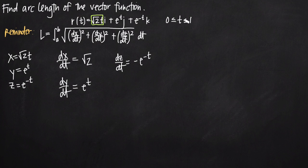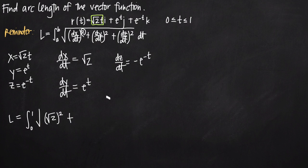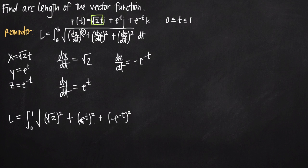Now we have all three derivatives and can plug them into our arc length formula. For a and b we use the closed interval from 0 to 1. So the arc length L equals the integral from 0 to 1 of the square root of: square root of 2 squared, plus e to the t squared, plus negative e to the negative t squared, all times dt.